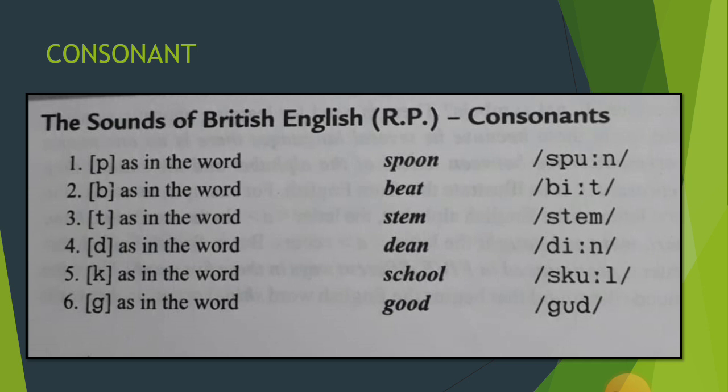Third symbol [t] as in the word 'stem'. Fourth [d] as in the word 'dean'. Fifth [k] as in the word 'school'. [g] as in the word 'good'.